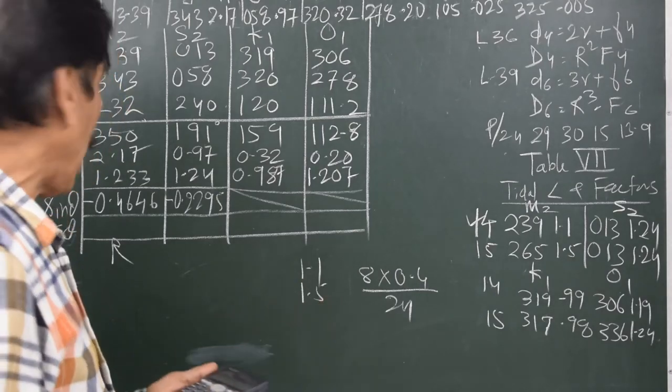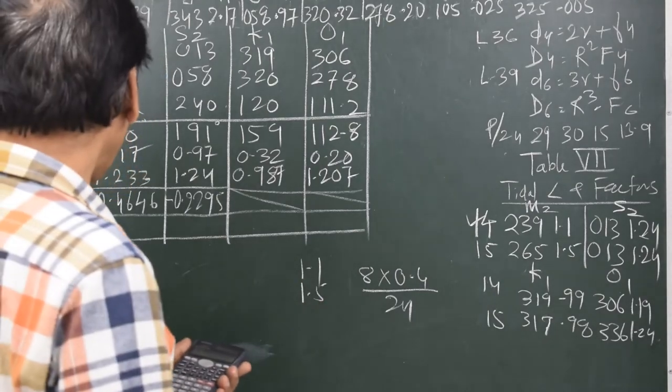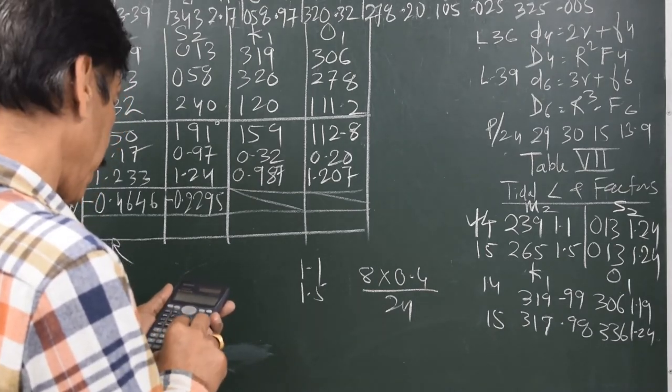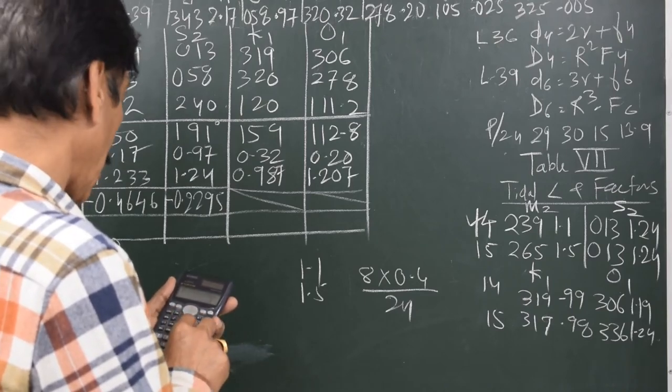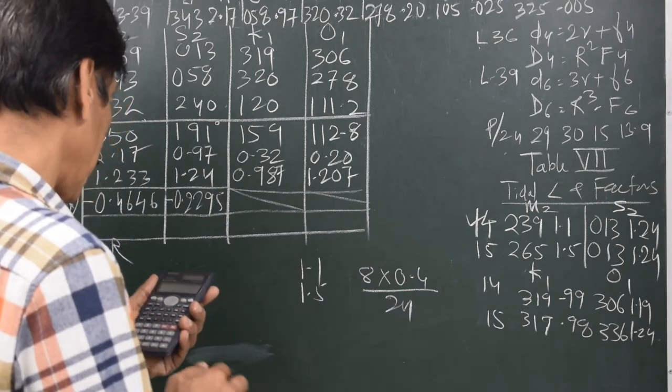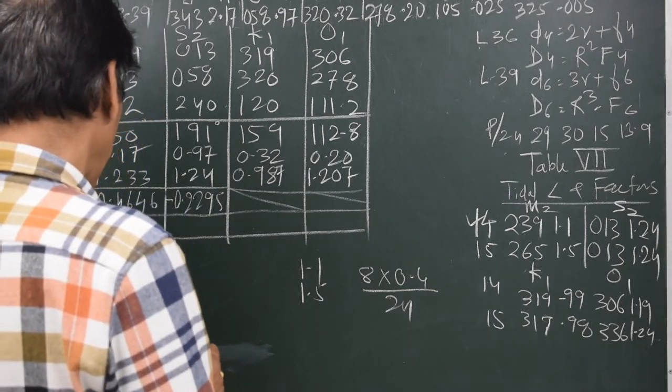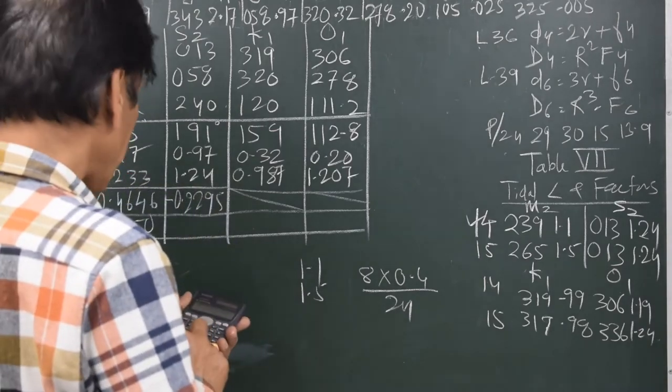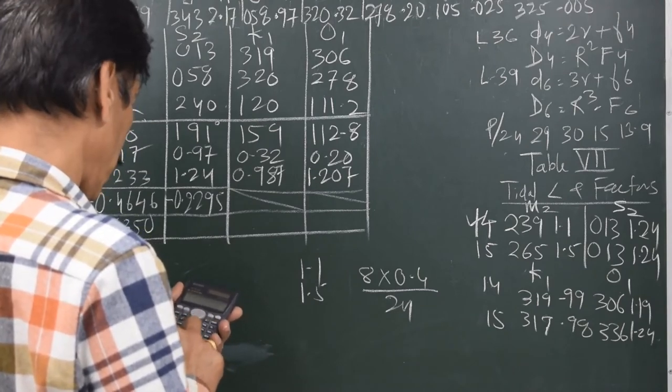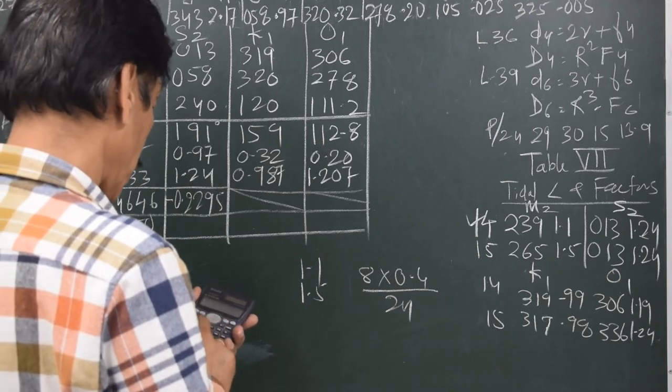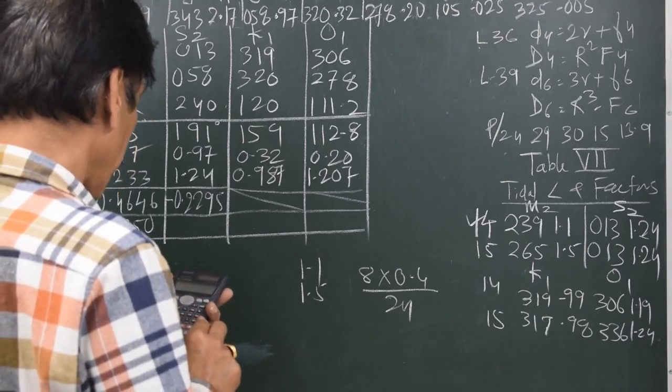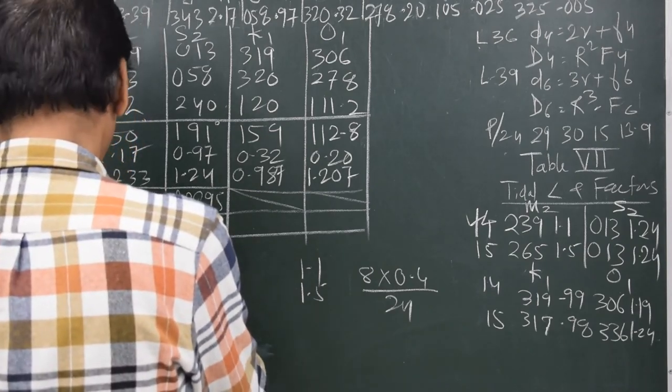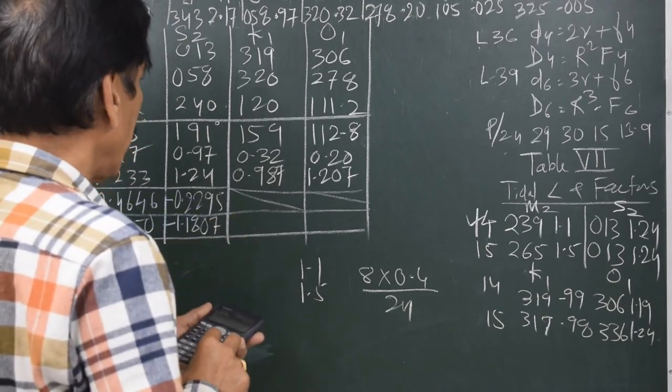So now I write down the values of H F_t cos theta for all the 4 columns. So I start: 2.17 into 1.233 into cos 350 degrees. That is 2.6350. Next is 0.97 into 1.24 into cos 191 degrees. Minus 1.1807.